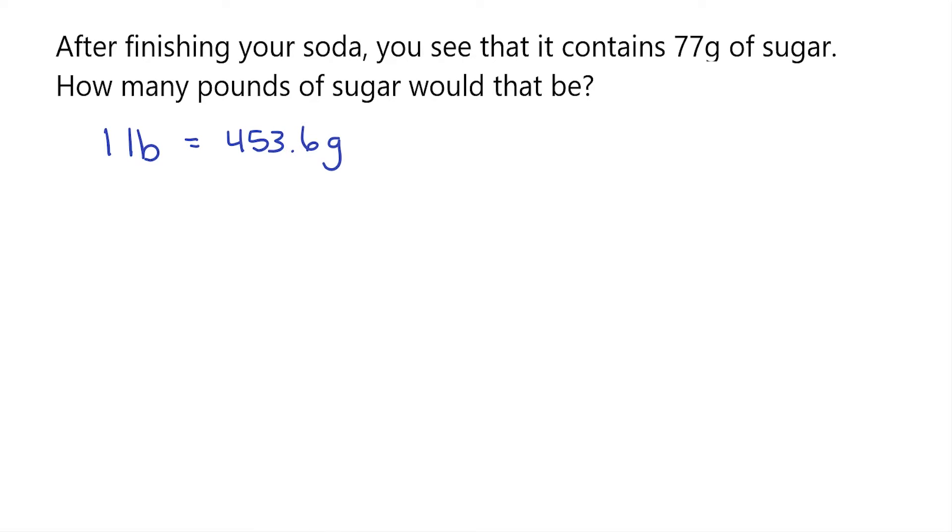Now let's create some fractions and choose the one that's gonna help us solve this problem. So we could say that for every one pound, we have 453.6 grams, or we could say that for every 453.6 grams, we have one pound.